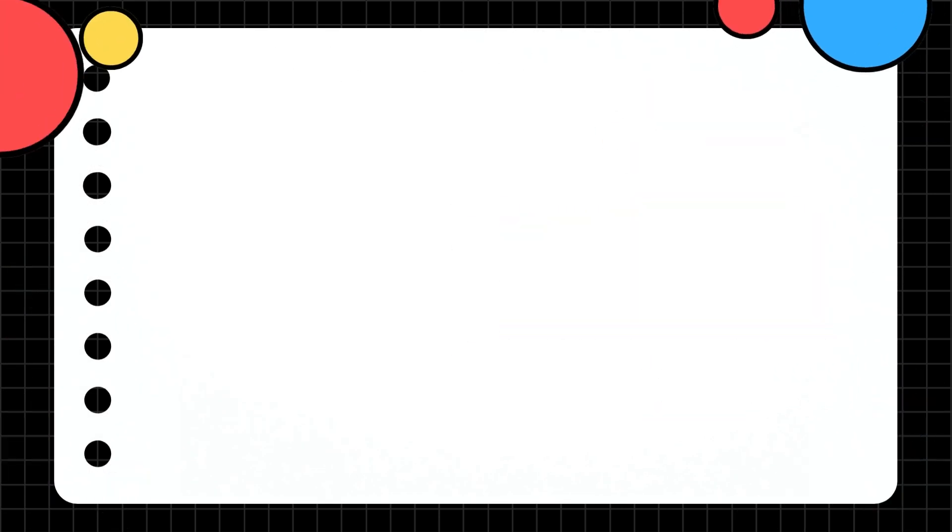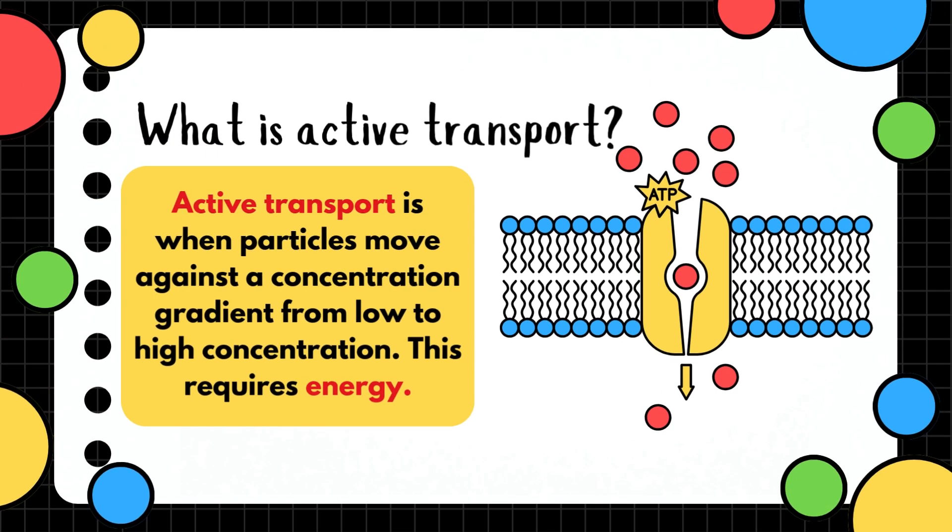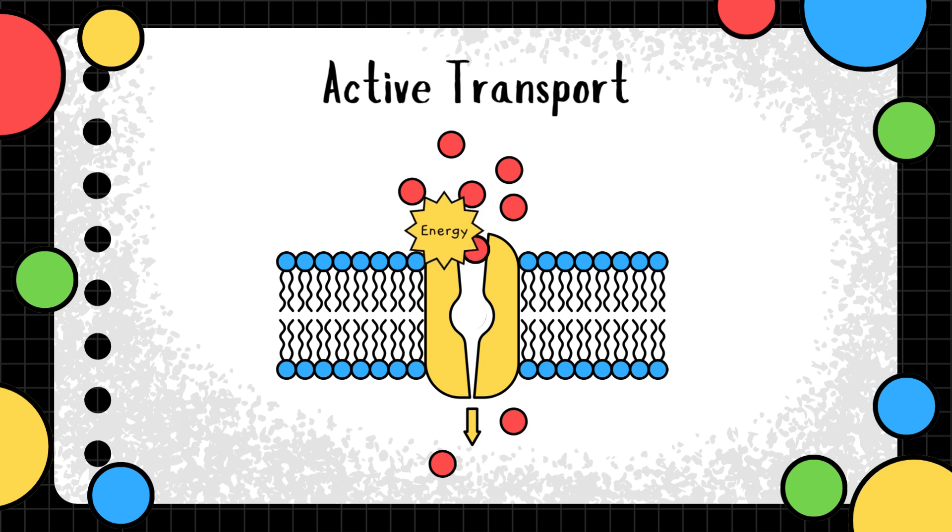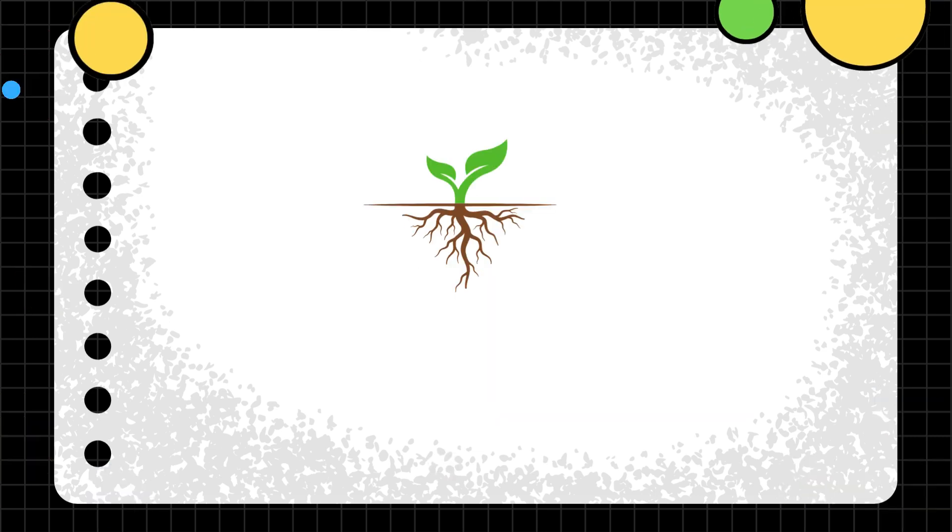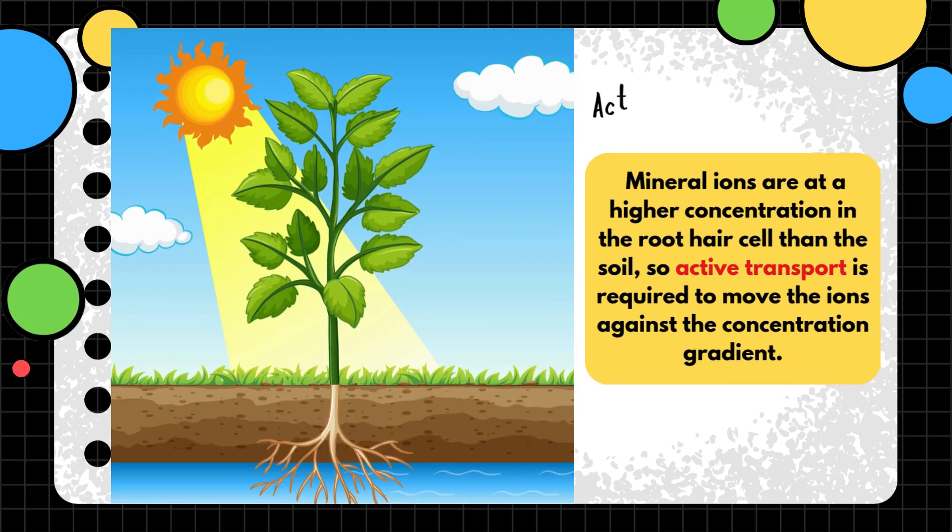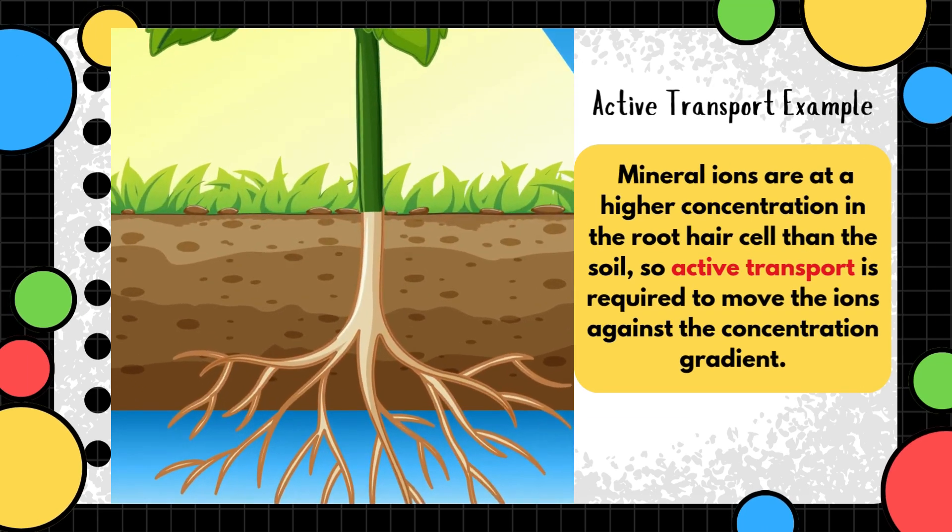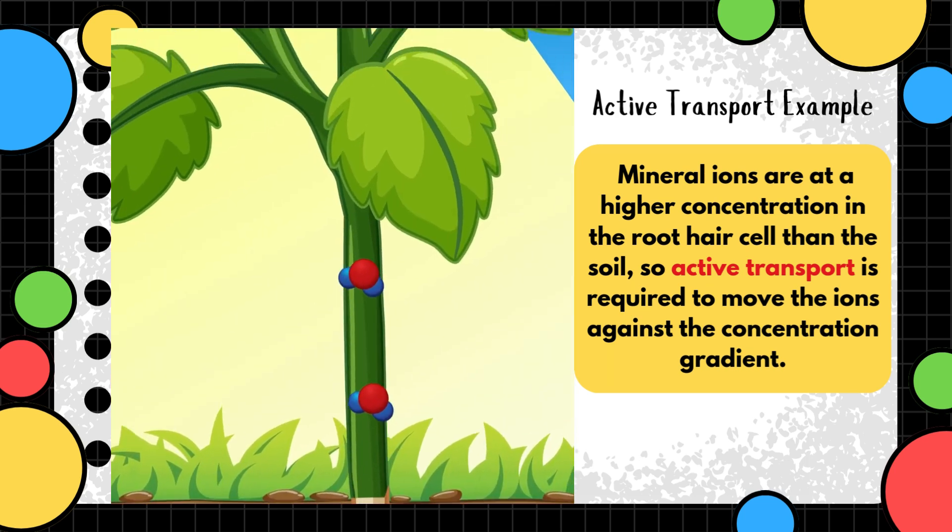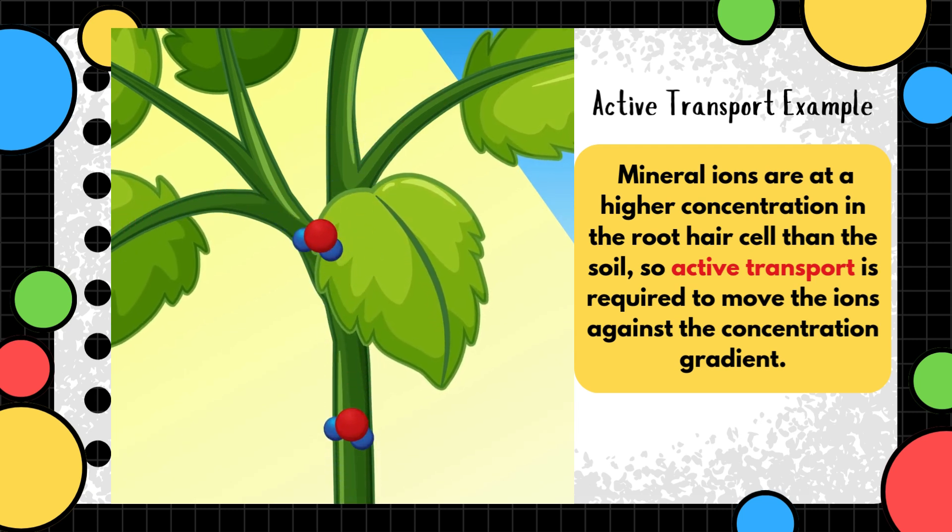What is active transport? Active transport is when particles move against a concentration gradient from low to high concentration, so it requires energy. Here's an example: a plant takes up mineral ions through root hair cells. Mineral ions are at a higher concentration in the root hair cell than the soil, so active transport is required to move the ions against the concentration gradient.